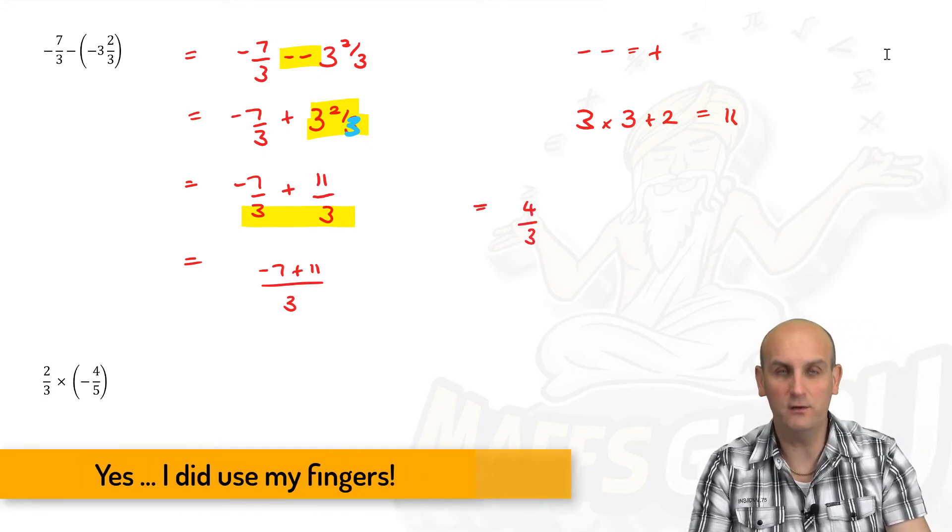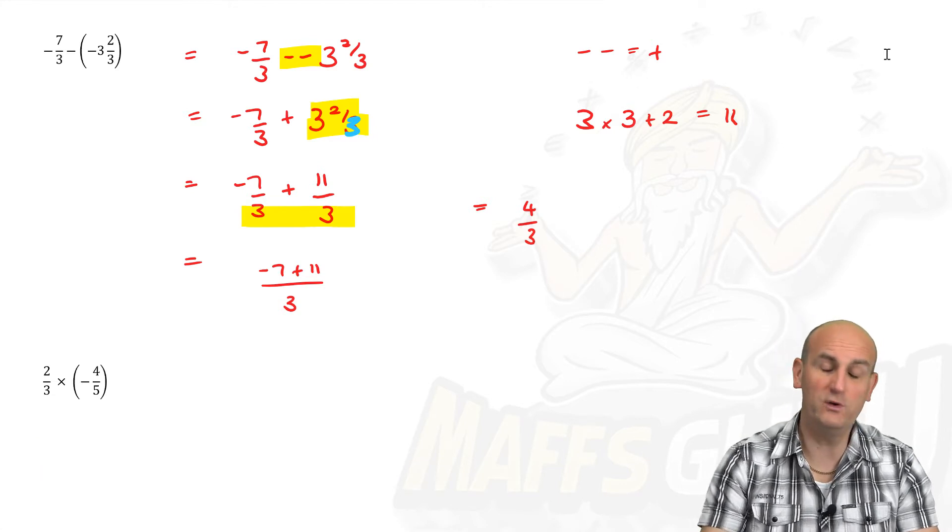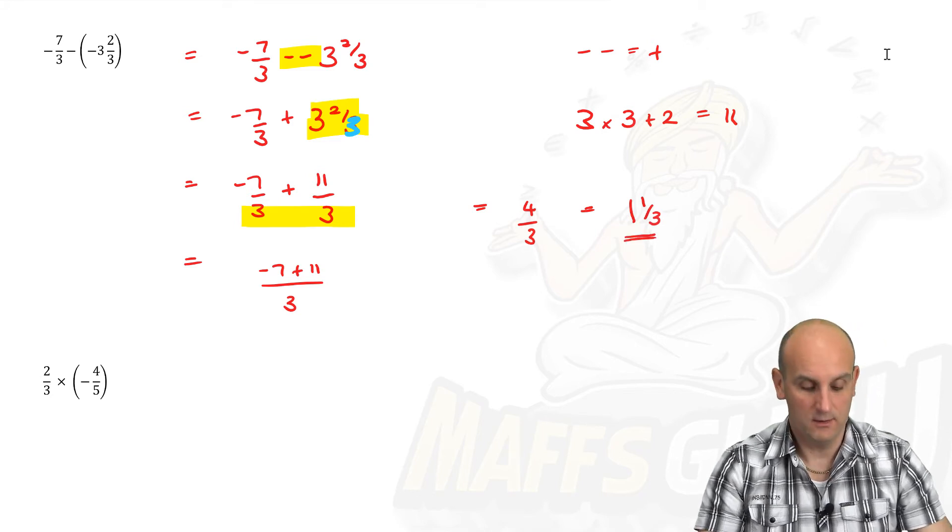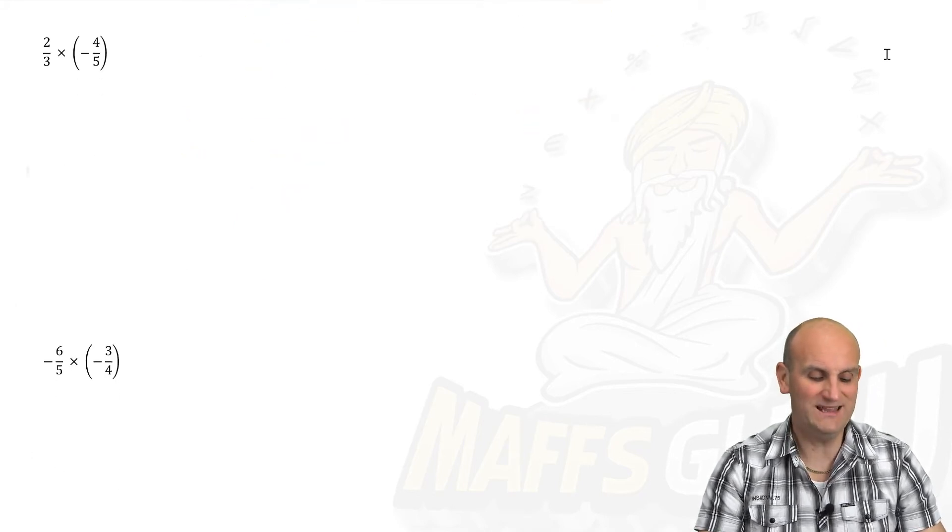Okay, which is now going to give me the answer of four on three. Is that my final answer? Nope, because it is top heavy. And so four divided by three goes in one whole one remained a one. So it must be one and one third.